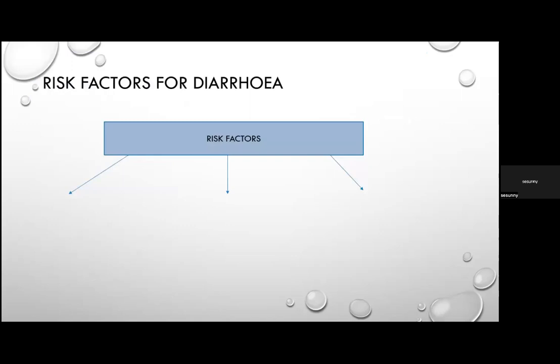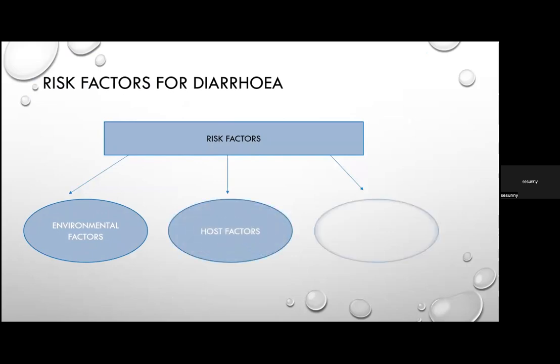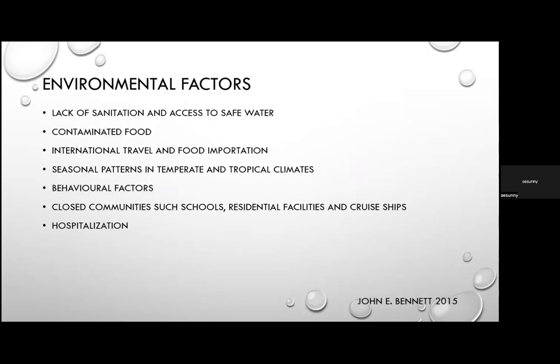Risk factors for diarrhoea fall into three groups: environmental, host, and microbial. Regarding environmental factors, lack of sanitation and access to safe water plays an important role in transmission of enteric pathogens. Contaminated food — fruits, vegetables, beef, raw crops — are commonly implicated in foodborne illness.